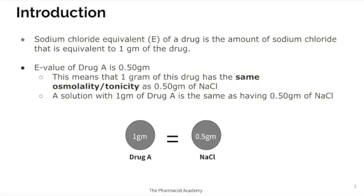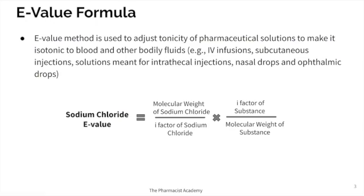Sodium chloride equivalent, also known as the E value of a drug, is the amount of sodium chloride that is equivalent to one gram of the drug. For example, if the E value of Drug A is 0.50 grams, this means that for every one gram of Drug A, it will have the same osmolality or tonicity as 0.50 grams of sodium chloride. In other words, a solution with one gram of Drug A is kind of like saying that you have 0.50 grams of sodium chloride in that solution.